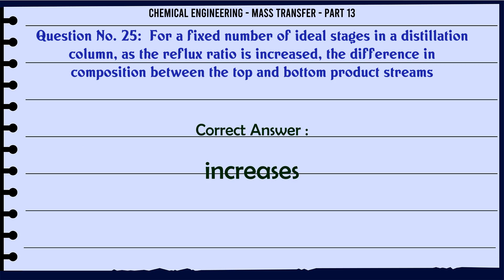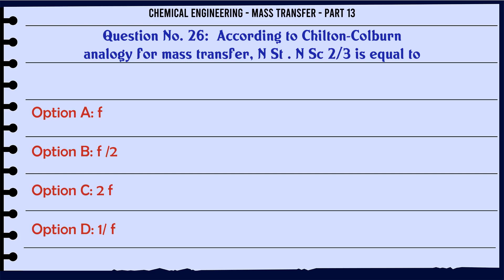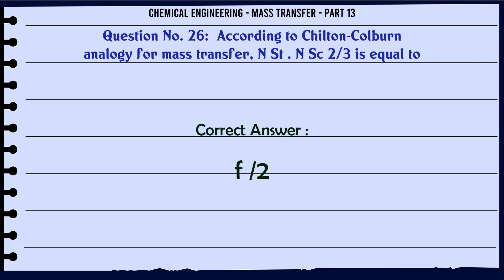According to Chilton-Colburn analogy for mass transfer, NSc^(2/3) is equal to: A. F. B. F/2. C. 2F. D. 1/F. The correct answer is: F/2.